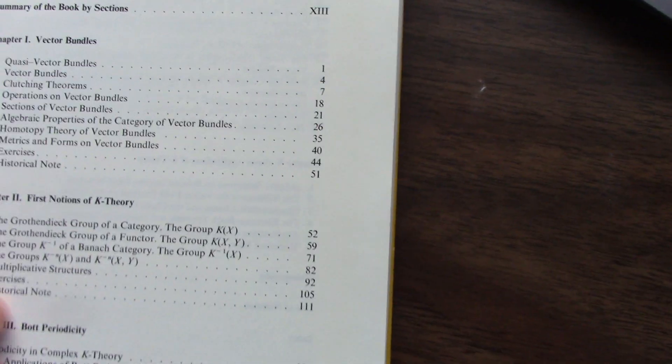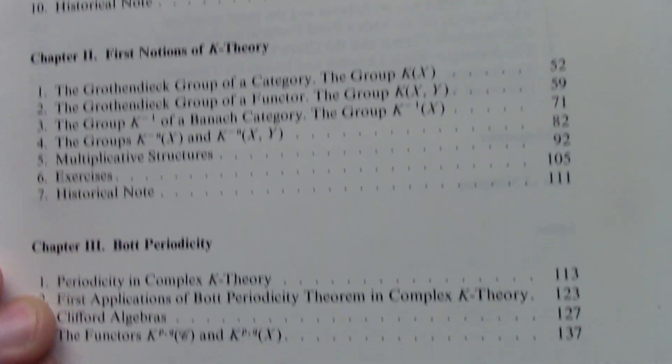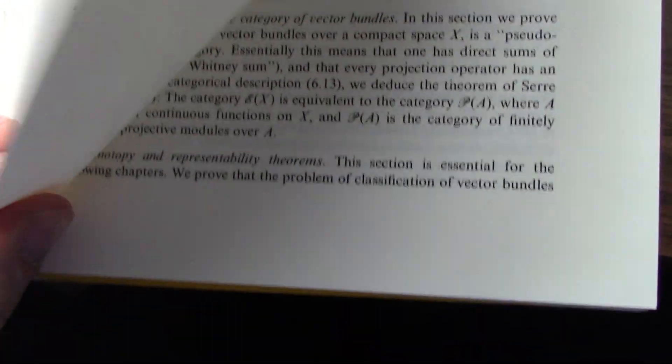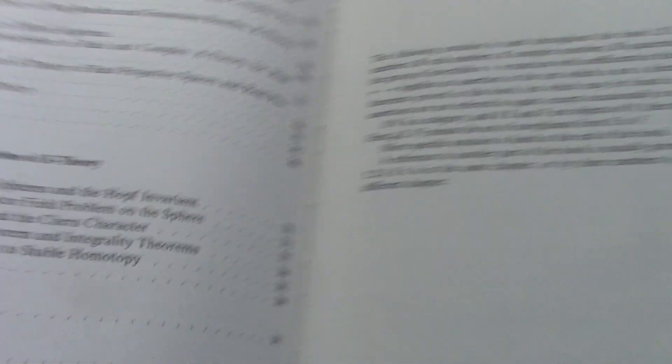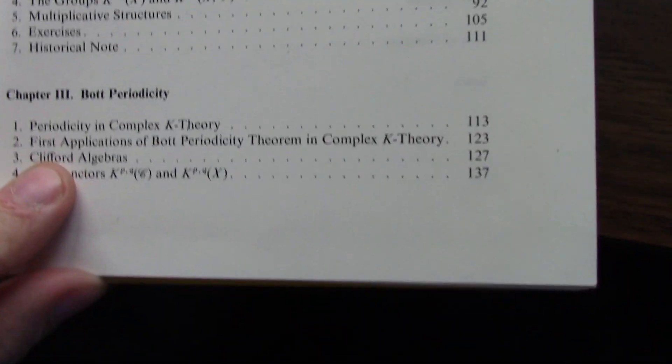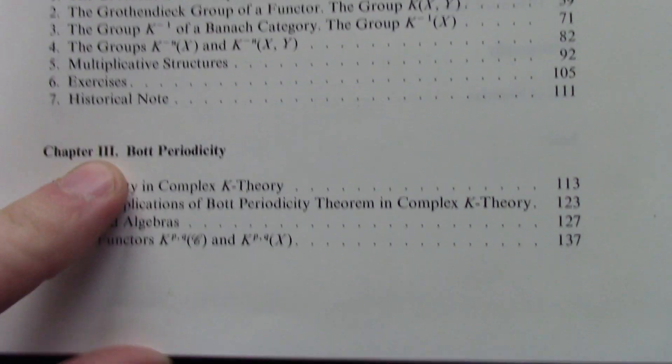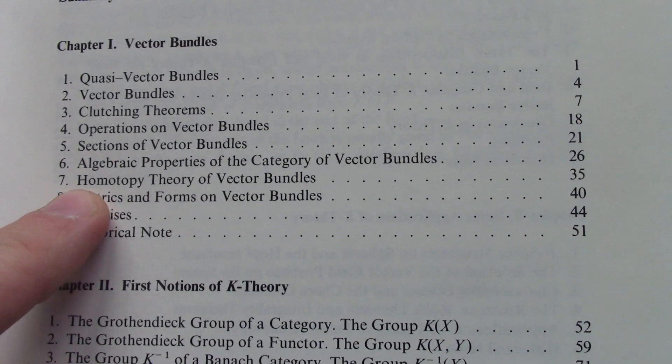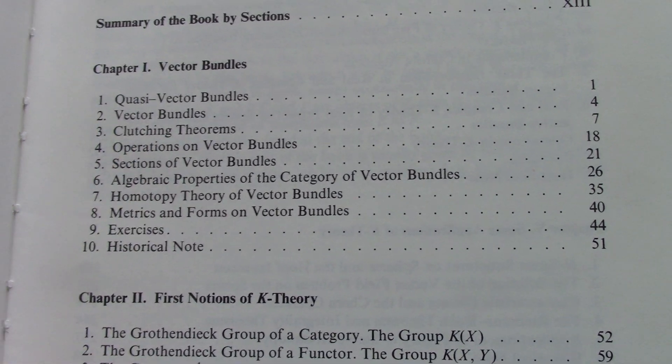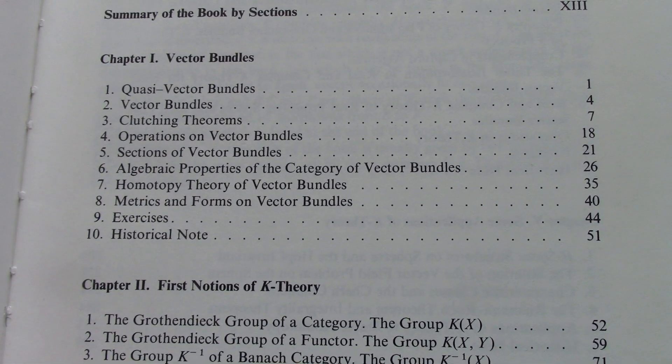I've barely looked at this book. I really don't have much to tell you because I don't know about it pretty much at all. I know about periodicity, the Bott Periodicity theorem. Vector bundles — I once learned about clutching theorems. That's about it. But I like that the book has historical notes in it, so that's promising for interesting stuff down the road.